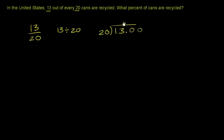And we could say, hey, look, 20 goes into 13, 0 times. 0 times 20 is 0. And then 13 minus 0 is 13. Now you bring down a 0. 20 goes into 130.